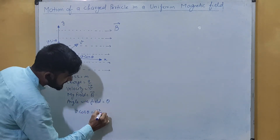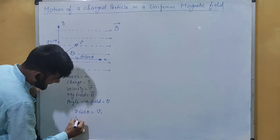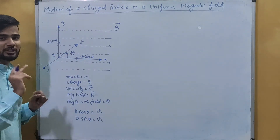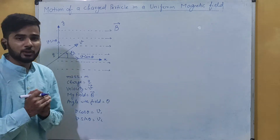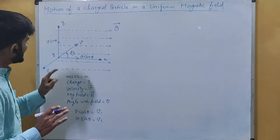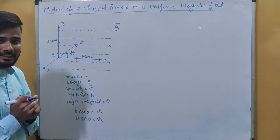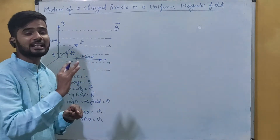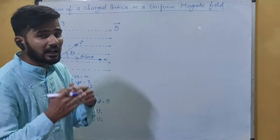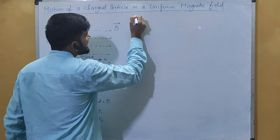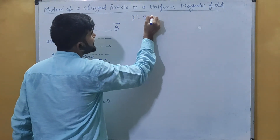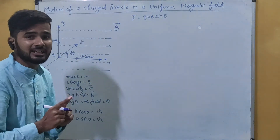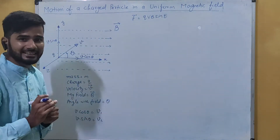We have two components of this velocity vector: v cos theta which we can write as v1, and v sin theta which we can write as v2. v1 is along the direction of the magnetic field. The force on a charged particle in a magnetic field is F = qvB sin theta, which we have already seen.